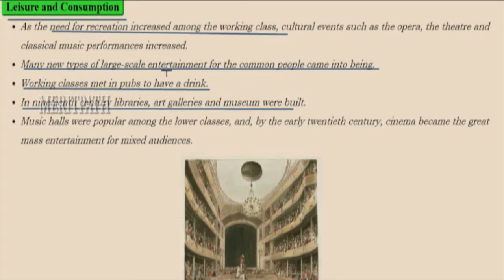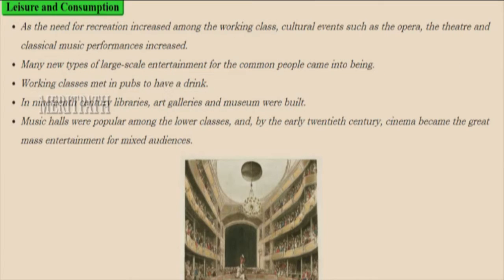Many new types of large-scale entertainment for common people came into being. Working classes met in pubs to have a drink. In the 19th century, libraries, art galleries, and museums were built. Music halls were popular among the lower classes, and by the early 20th century, cinema became the great mass entertainment for a mixed type of audience.